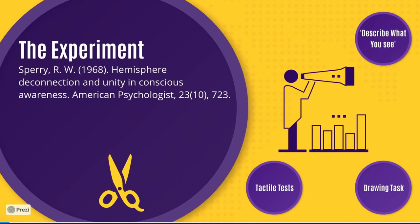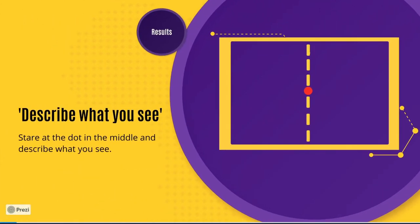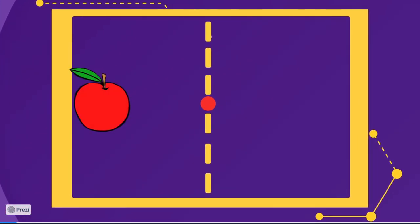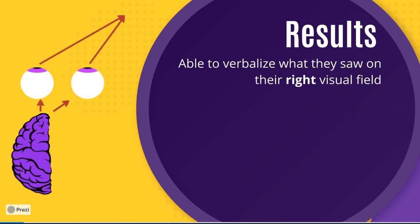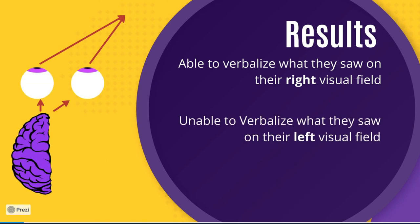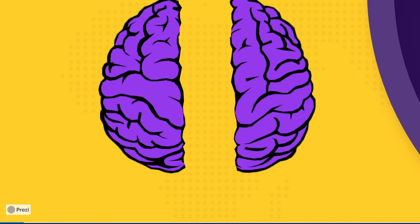He tested these people in three main experiments. The first was the describe what you see test. The patients were asked to stare at the middle of a screen as images flashed up to the left and right side of their visual field. They were then asked to describe what they had seen. While I'm sure you wouldn't have struggled describing what you just saw on both sides, the people in the study were able to tell Sperry what they saw on their right visual field but were unable to describe what they saw on their left visual field, many not even realizing they had been shown anything at all. This was because their right brain had seen the image but couldn't produce the language needed to describe it, while the left brain had no problem doing so.